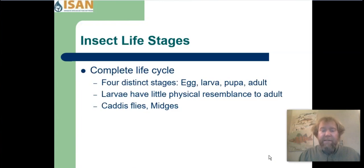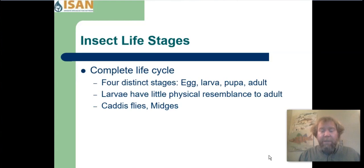The other type of life cycle is the complete life cycle. It has four stages: egg, larva, pupa, and adult. The interesting thing is that the larva have very little physical resemblance to the adult, because of the pupa stage. In the pupa stage, they go through a big transformation called metamorphosis where they change completely. You can think of this like how a caterpillar turns into a butterfly — it builds a chrysalis, which is the pupa stage, and what comes out is a totally different insect.